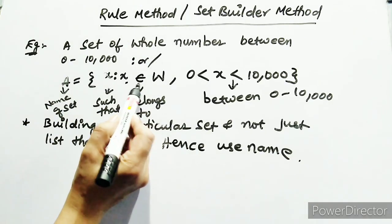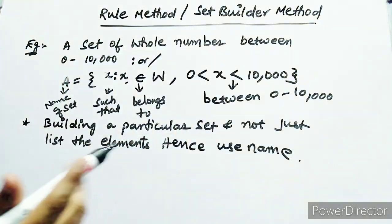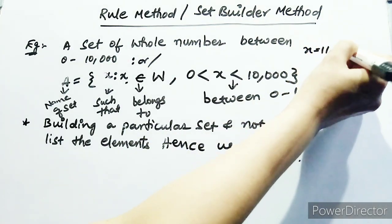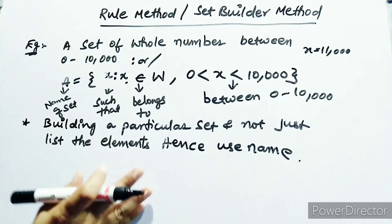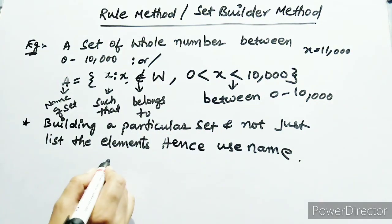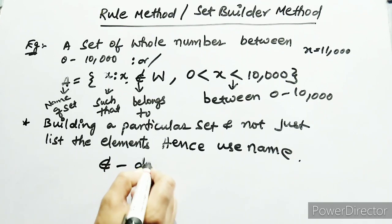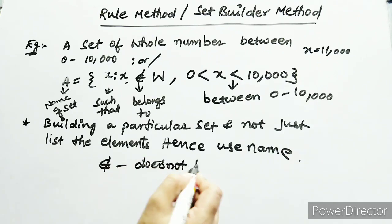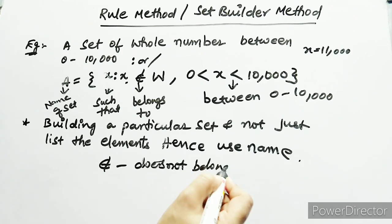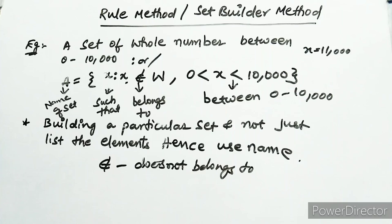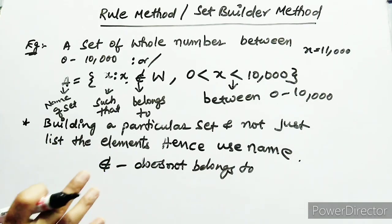If x = 11,000, that value is not in the set, so you would use the 'does not belong to' symbol. You should keep in mind both symbols: 'belongs to' when an element is in the set, and 'does not belong to' when an element is not part of the set.